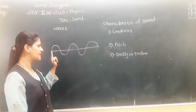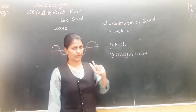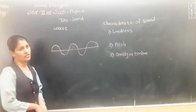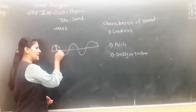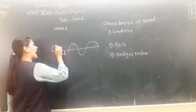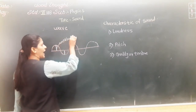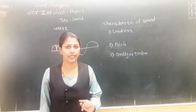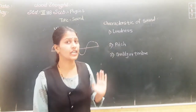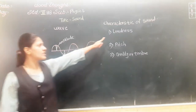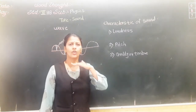Let's revise what a wave is, because this is very important — the characteristics of sound depend on this. So just see here. The maximum displacement of a wave is called amplitude. Amplitude is the maximum displacement of sound, and this helps us describe the characteristic of loudness — how loud our sound is.